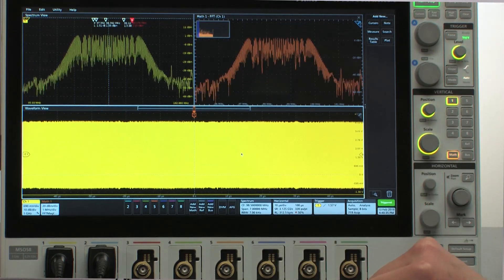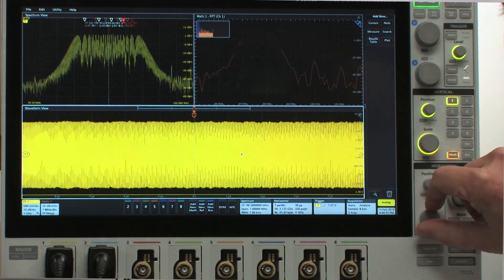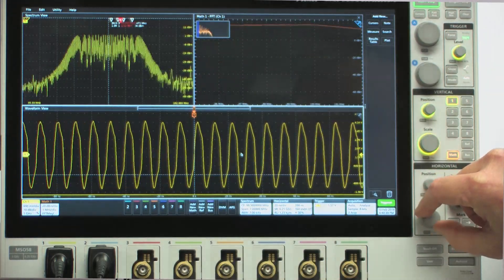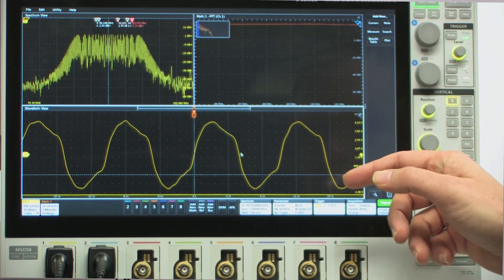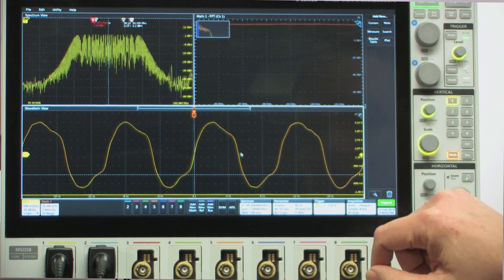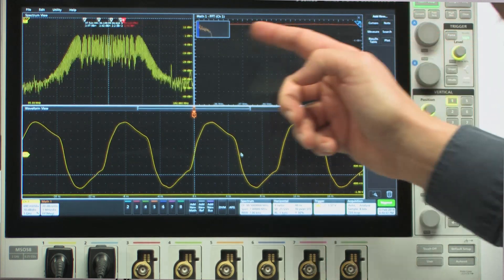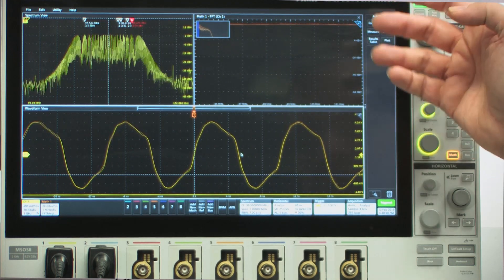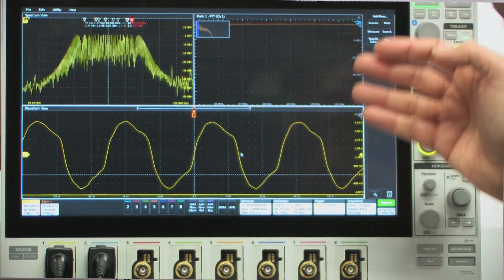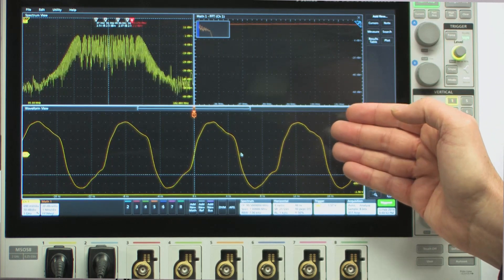Well, let's say that I wanted to look at a few cycles of my spread spectrum clock. I'll do that by changing my horizontal scale here, so I'm going to scale in until I see just a few cycles of my clock. Notice what happened to my FFT view: it's back to showing a flat line across the top because I don't have enough resolution because of my time per div setting.